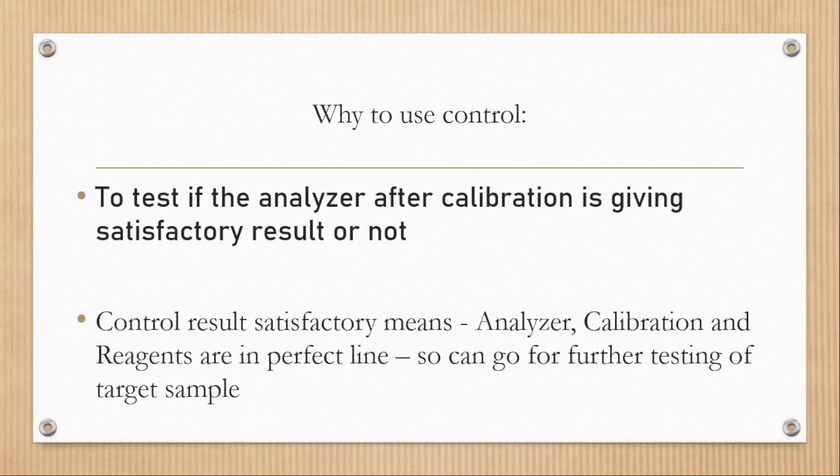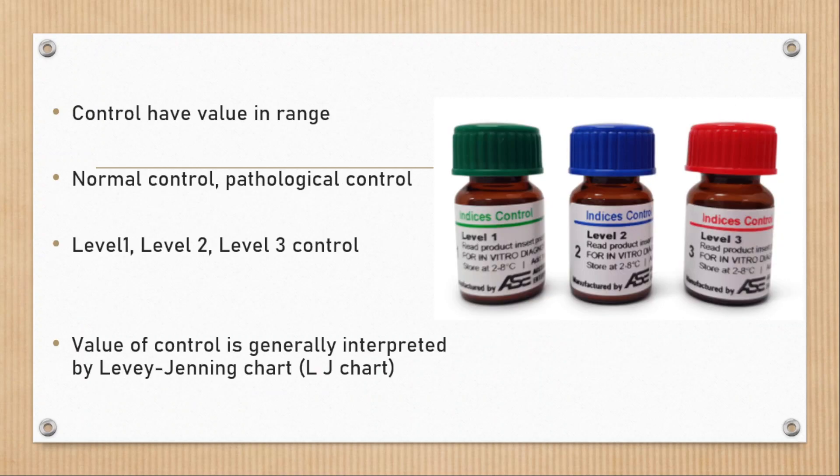Overall, control test result permits green signal for further testing. Control have values in range, not fixed as standard and calibrator. Control can be categorized as normal and pathological, also as level 1, level 2, and level 3. That means we can have clinically high value control, normal value control, and low value control for particular analyte.